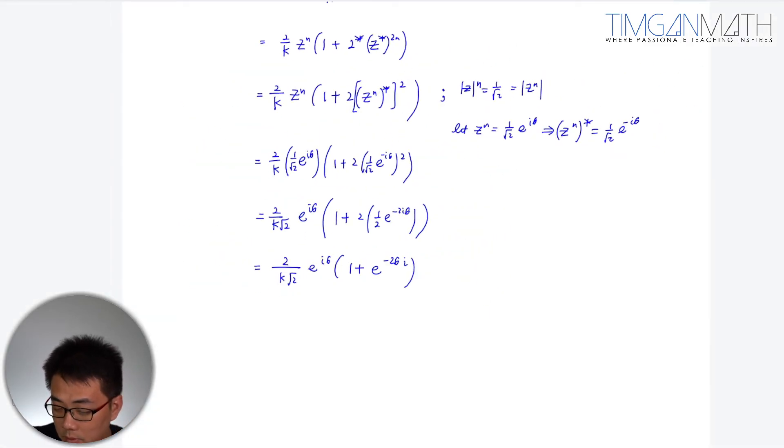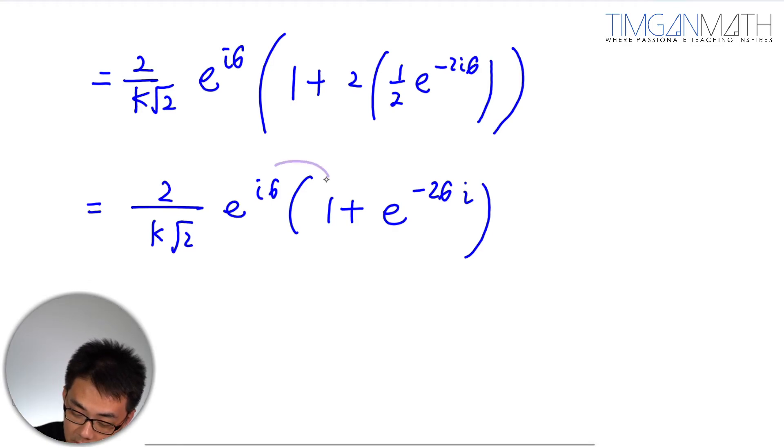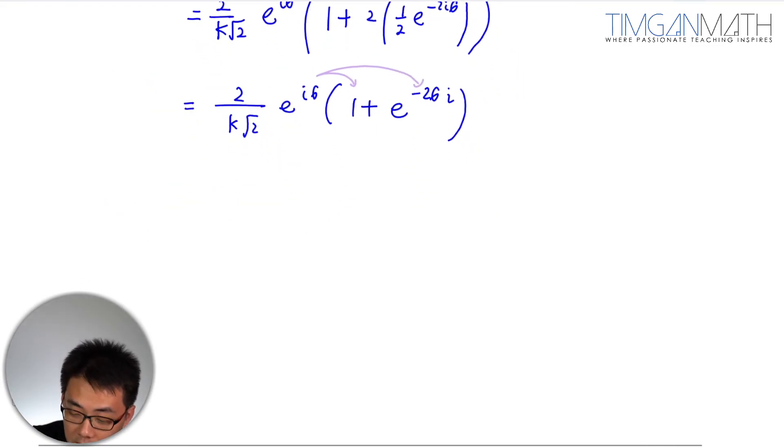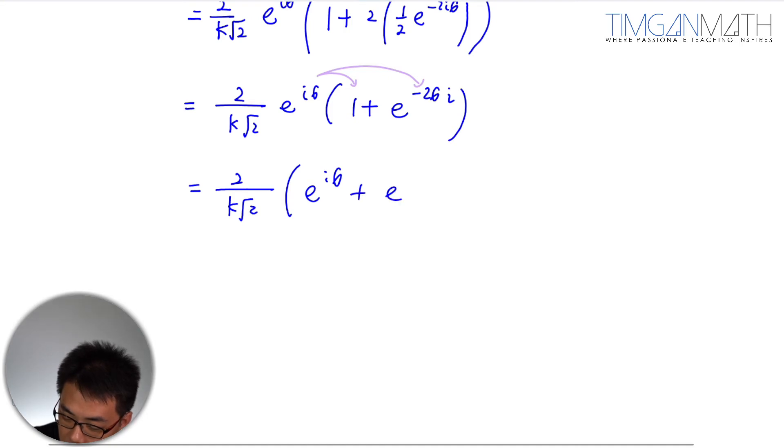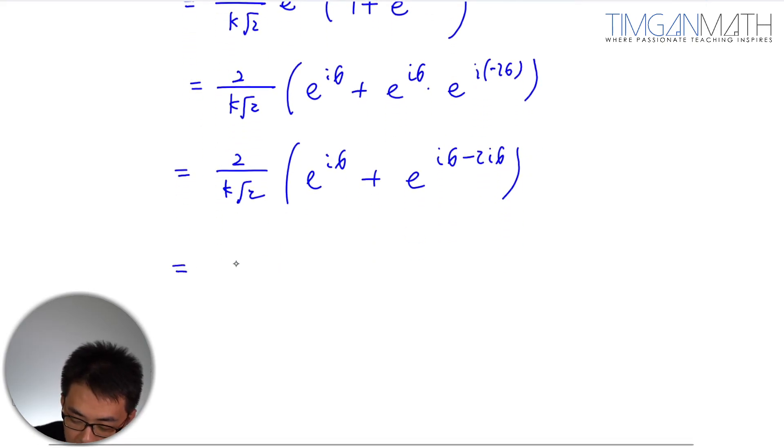Then we could just do the normal indices here and multiply this in. It will be quite straightforward already because then we will get this as 2/(k·root 2) times (e^(iθ) + e^(-iθ)) multiplied by e^(i - 2θ). So this will just be e^(iθ) plus e^(-iθ), and that will give us 2/(k·root 2) times (e^(iθ) + e^(-iθ)).